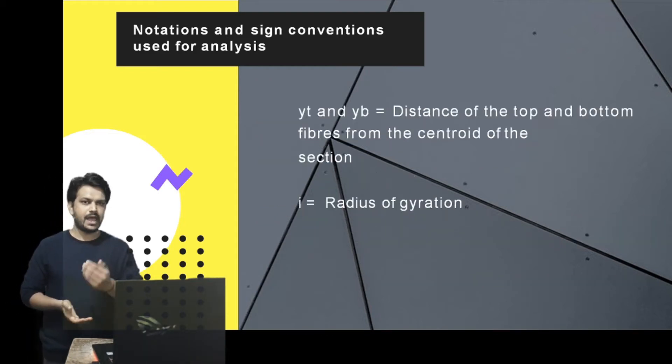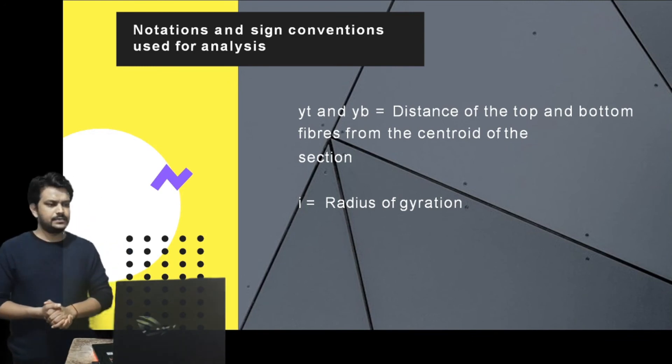YT and YB are the distances of the top and bottom fibers from the centroid of the section. r is the radius of gyration.